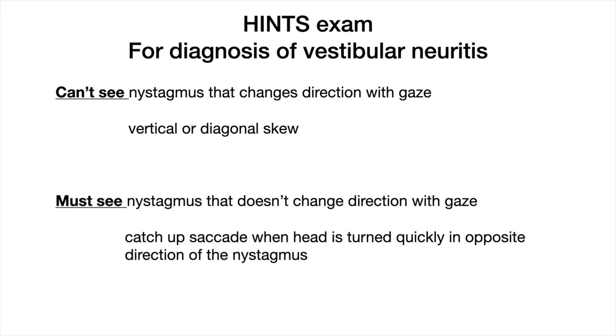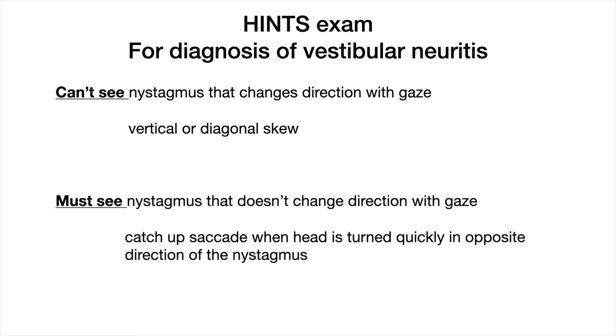You can't see nystagmus change its direction with gaze — as in this woman who has left horizontal nystagmus looking straight ahead, and it still beats left when she looks to the left, but when she looks to the right it beats to the right. You can't make the diagnosis of vestibular neuritis with nystagmus like that.